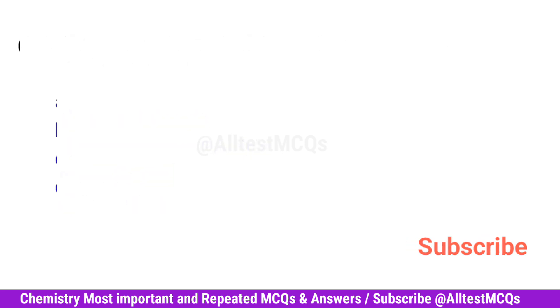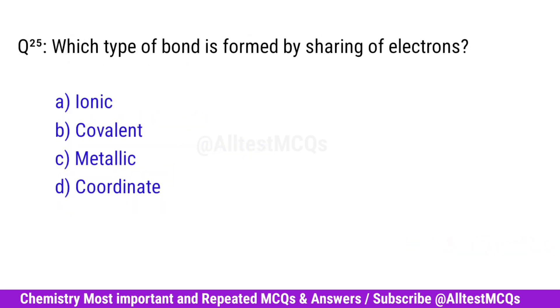Question No. 25. Which type of bond is formed by sharing of electrons? Correct option is B. Covalent.